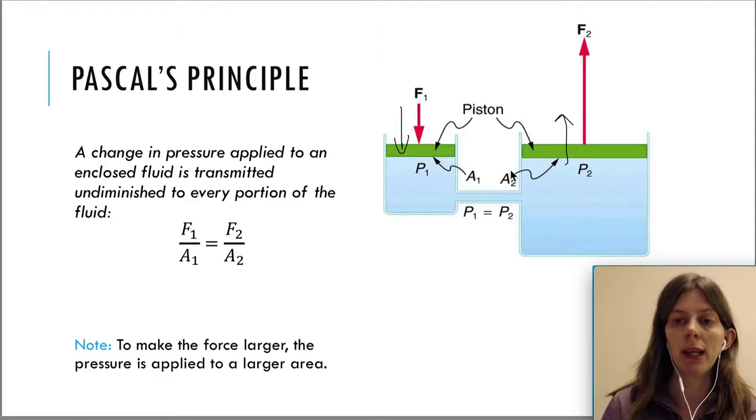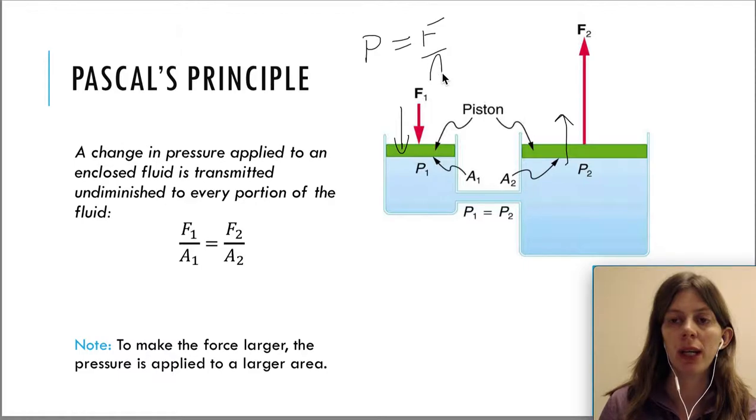We get an equation for this because pressure equals force per area. So the pressure on the left side, which is F1 over A1, is going to equal the pressure on the right hand side, F2 over A2.